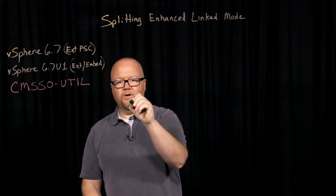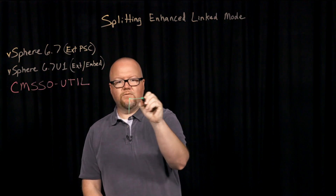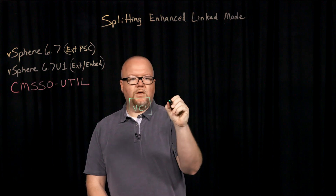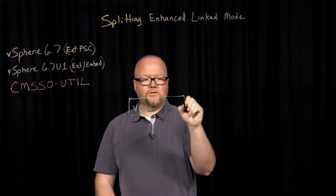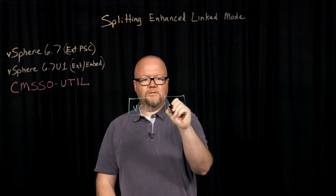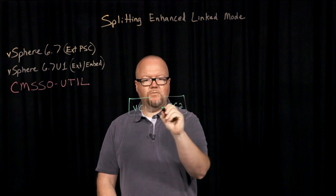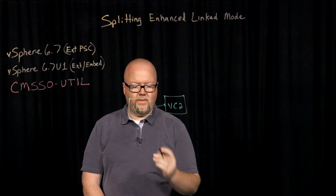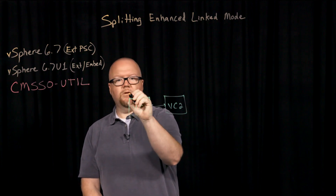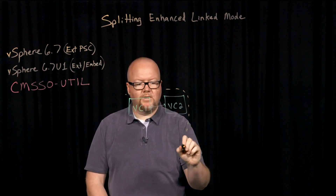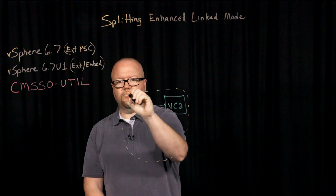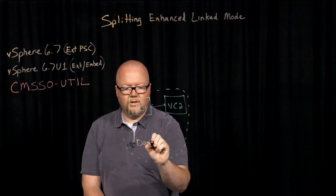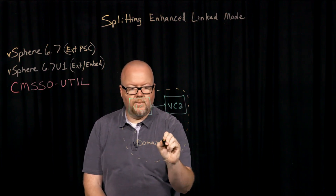So let's say we have a vCenter server, we'll call it vC1, and we have another vCenter server in that same domain, vC2. These are embedded nodes, all in the same SSO domain. We'll call this domain 1.